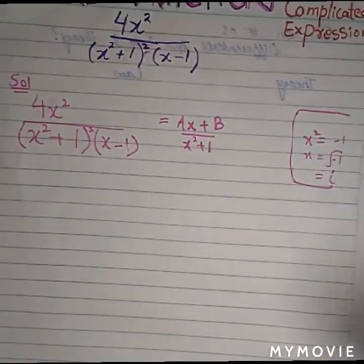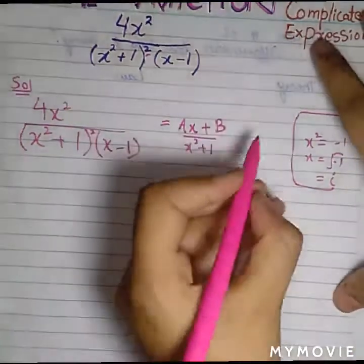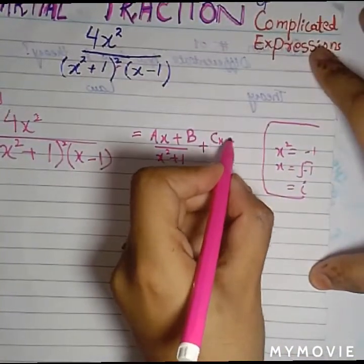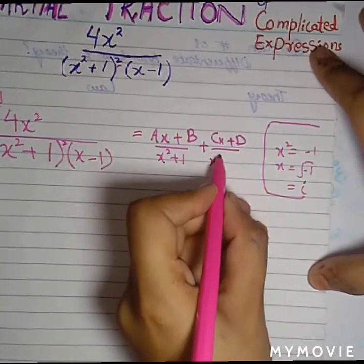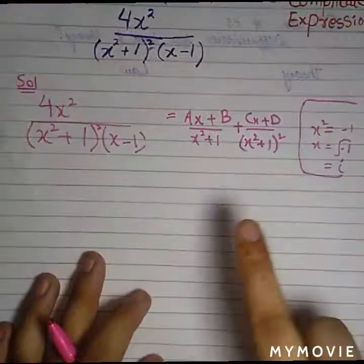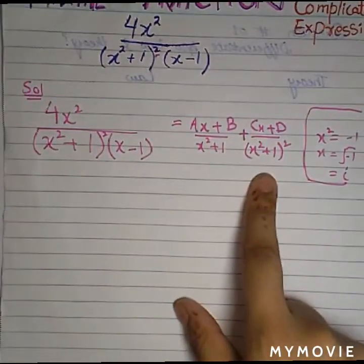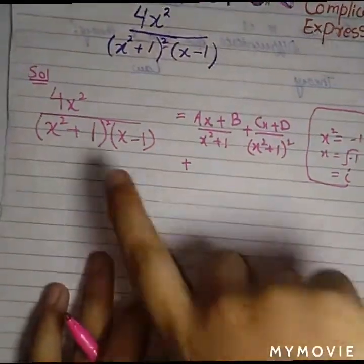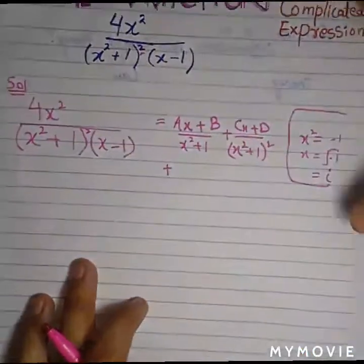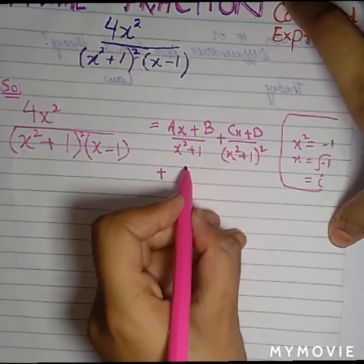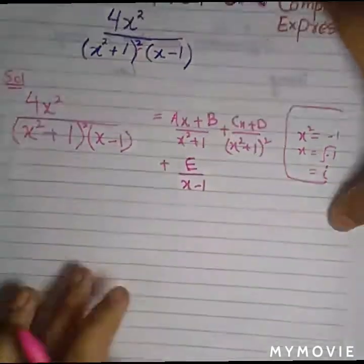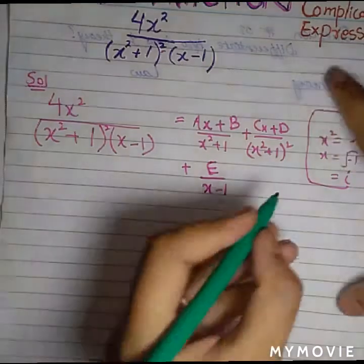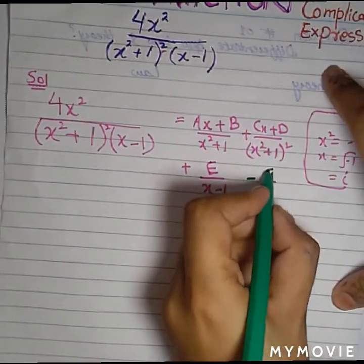The game is not over yet. We have to write for the square: one more complex term which is Cx plus D over (x squared plus 1) squared. First one for single, second one for double square. And the game is not over. We have to write for the simpler function which is E over x minus 1.